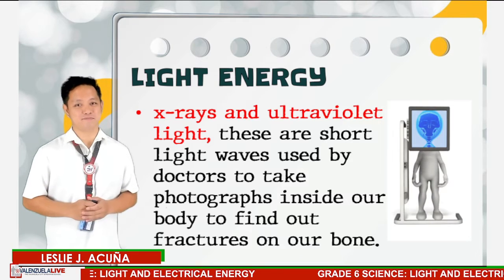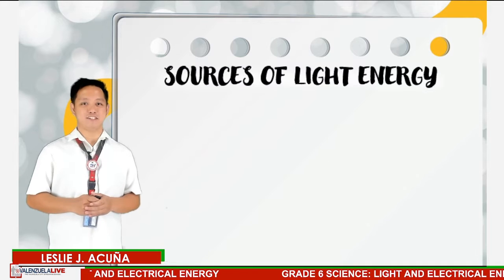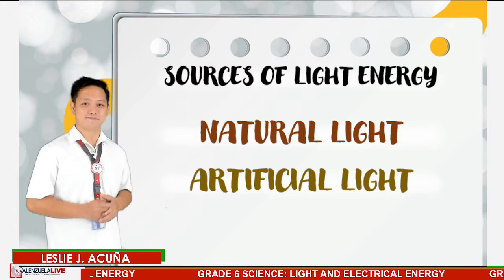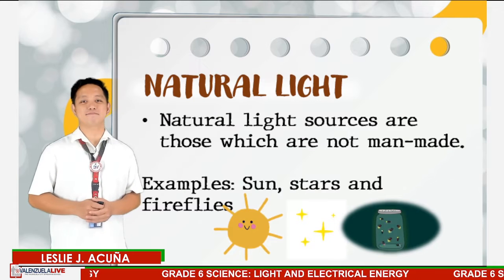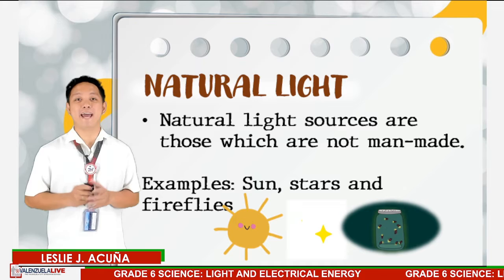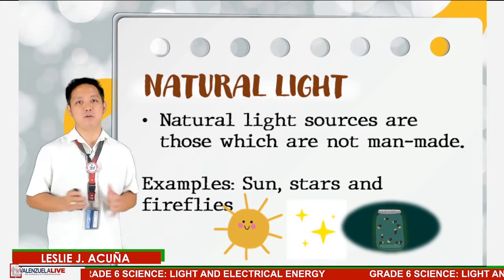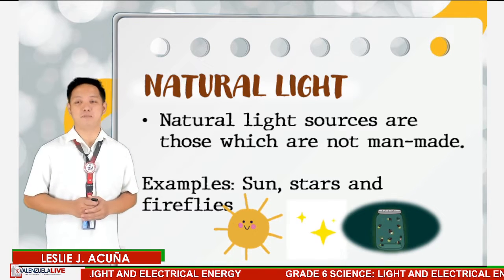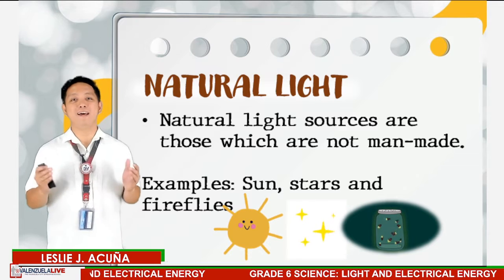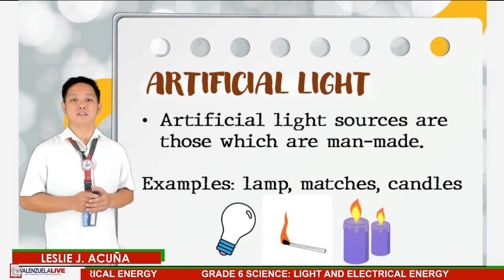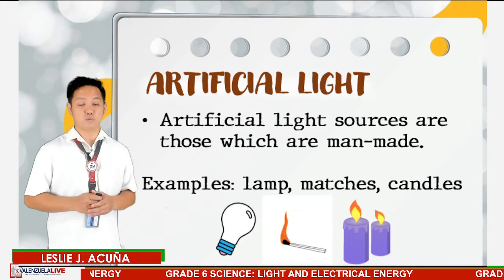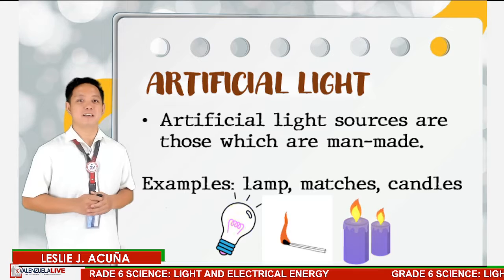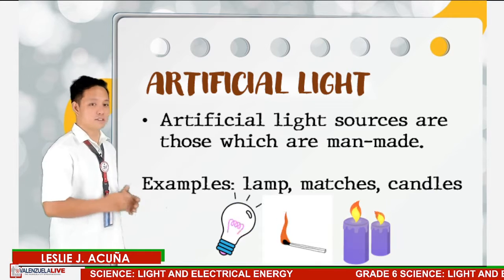We have two sources of light energy: natural light and artificial light. Natural light sources are those which are not man-made, such as the sun, stars, and fireflies. Artificial light sources are those which are man-made, such as lamps, matches, and candles.